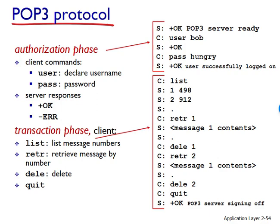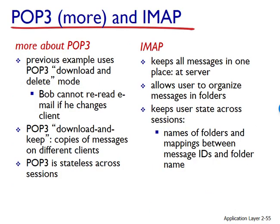In a POP3 transaction, the user agent issues commands and the server responds to each command with a reply. There are two possible responses: +OK, sometimes followed by server-to-client data, indicating the previous command was fine; and -ERR, indicating something was wrong with the previous command. The authorization phase has two principal commands: USER (username) and PASS (password) — similar to FTP. If you misspell a command, the POP3 server will reply with a -ERR message.